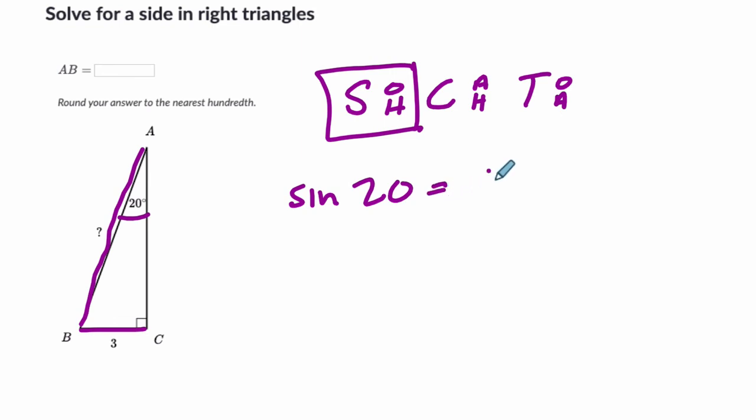It's the opposite, 3, over the hypotenuse. So you might have noticed in the other one, if you multiply both sides by X and then divide by the sine of 20, this goes, if you multiply both sides by X, you get X times the sine of 20 equals 3. And then you divide by the sine of 20.